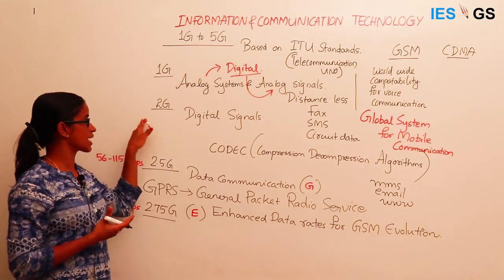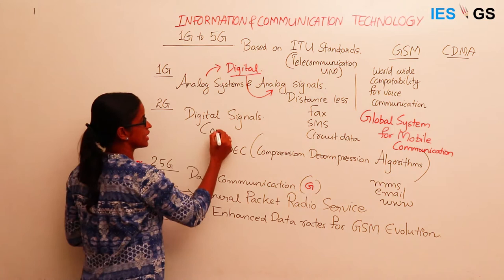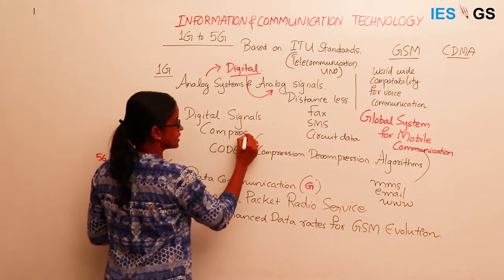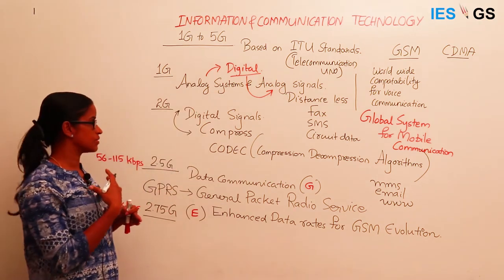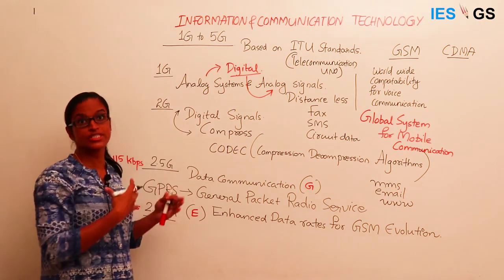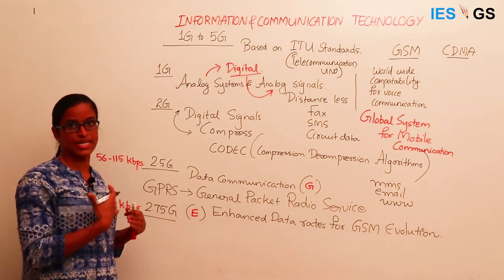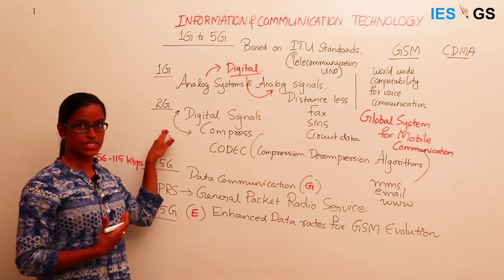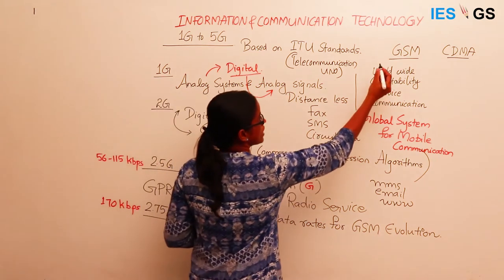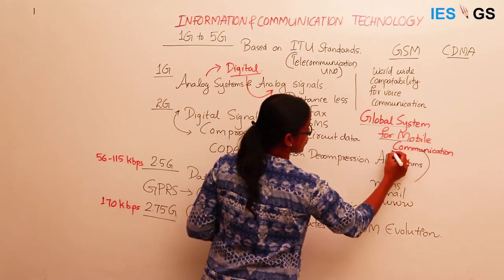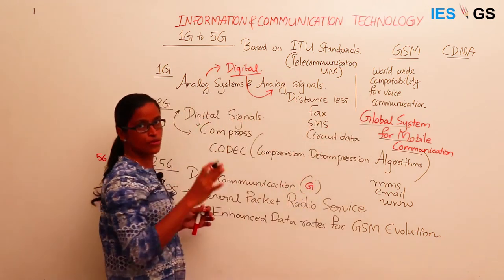The second generation came when we were able to digitalize the data. Digitalization plus compression gave a very good boost to this technology — we were able to transmit more data through the carriers. This revolutionized the technology, and we normally call it GSM, which stands for Global System for Mobile Communication.